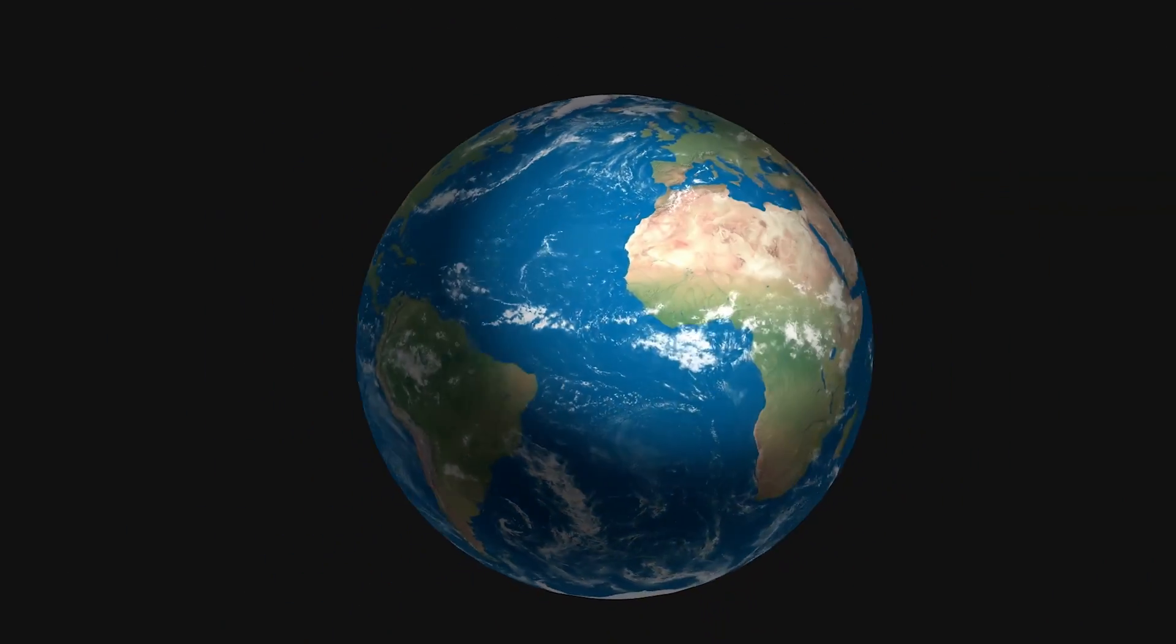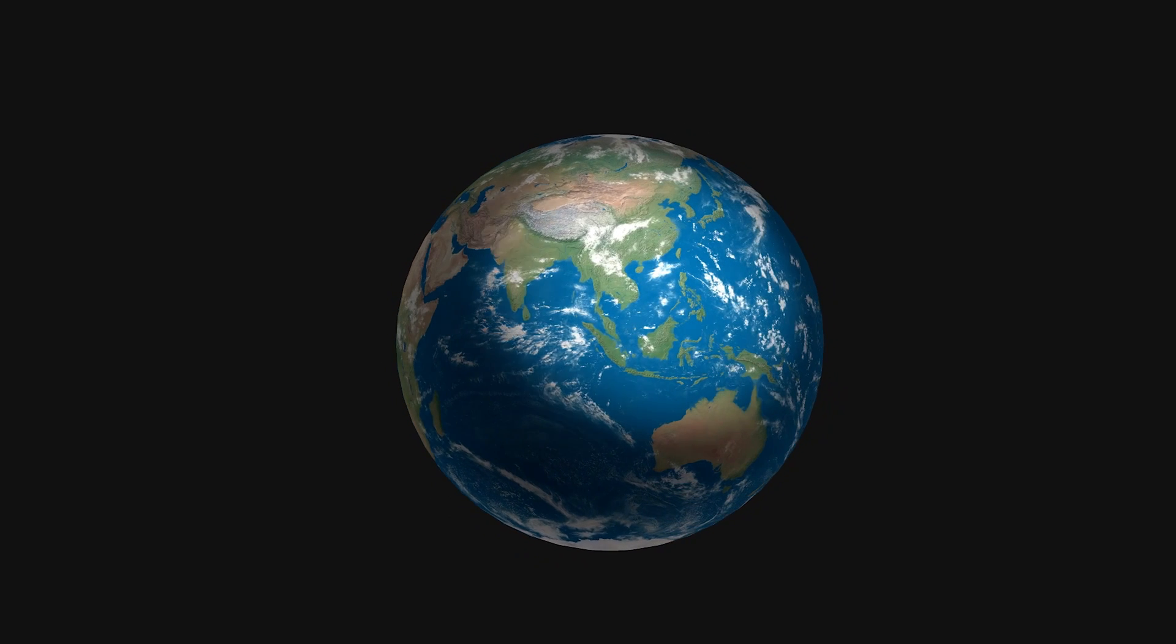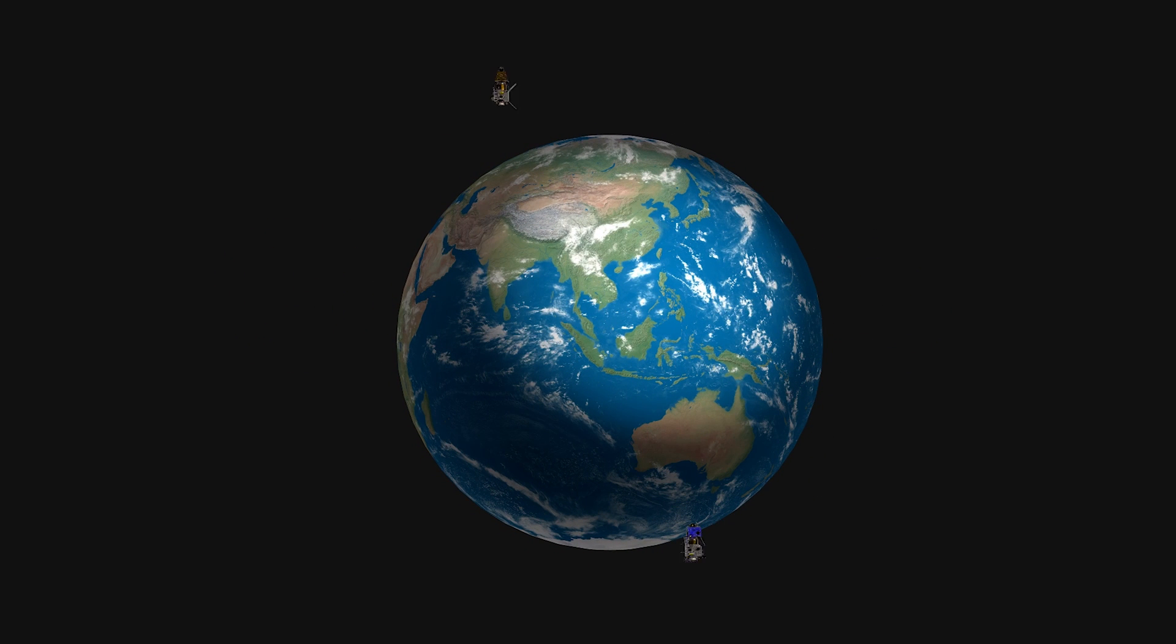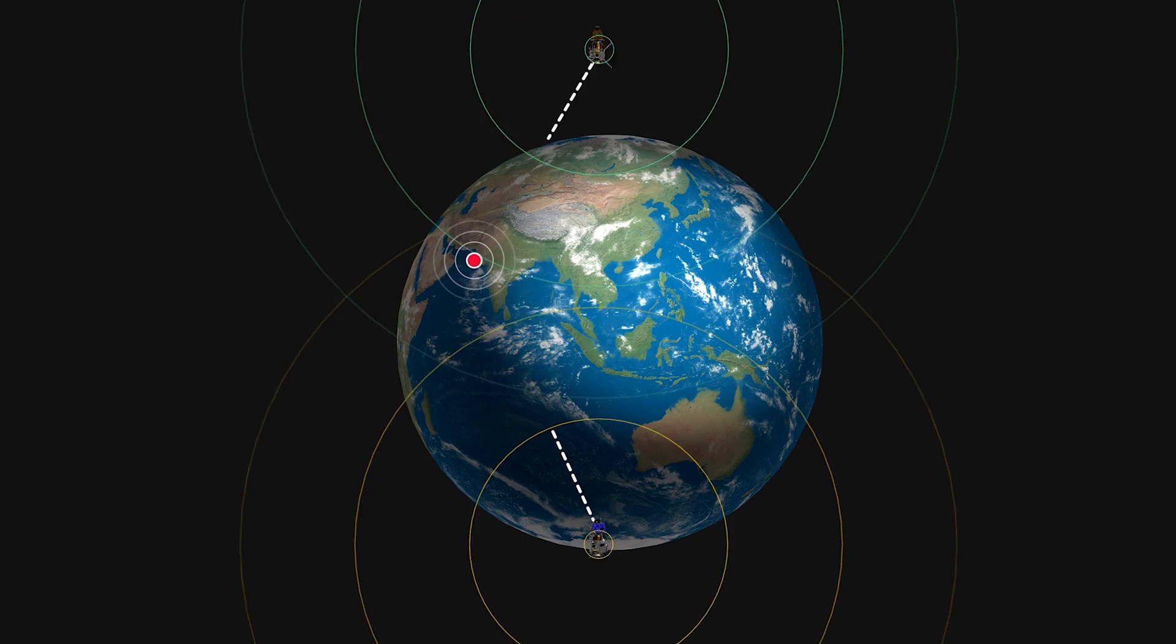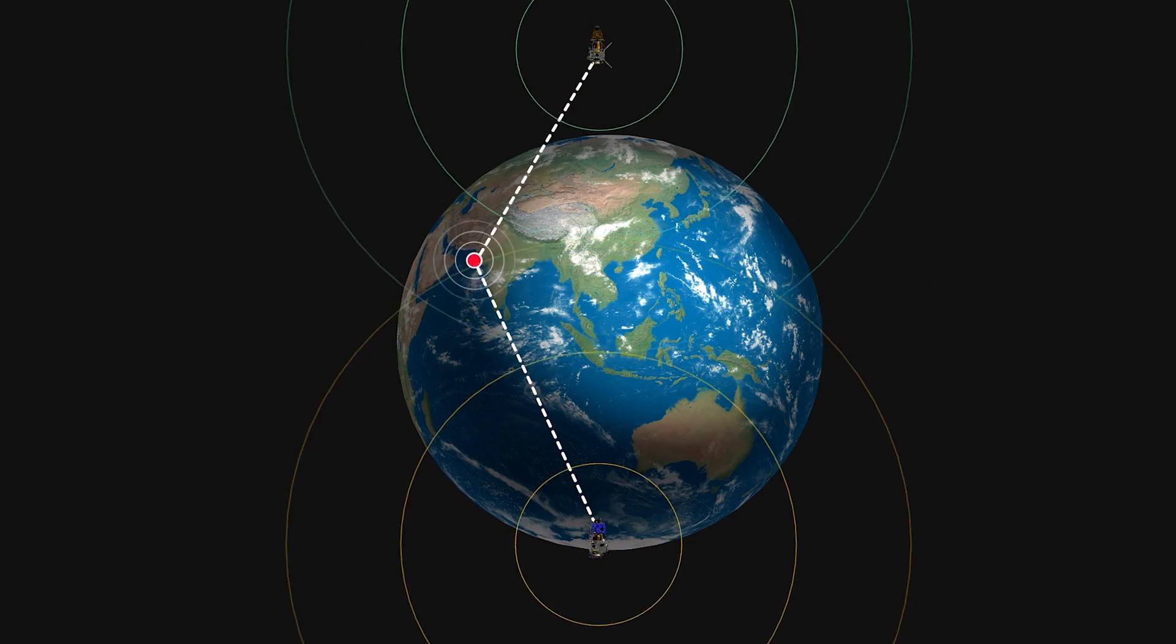What about our real 3D world? In this case, the reference points are the satellites circling the earth. Your smartphone communicates with some of these satellites and calculates its distances from them. How?